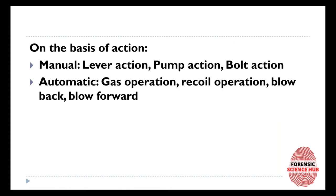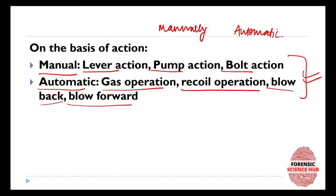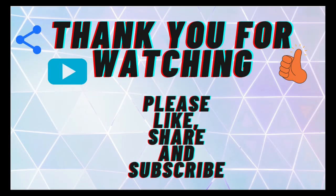On the basis of action, firearms are of two types: manually loaded or automatically loaded. Manually loaded firearms have lever action, pump action, and bolt action, whereas automatically loaded firearms have gas operation, recoil operation, blowback, and blow-forward actions. These have been discussed in detail in a separate video on firing mechanisms, linked in the description box.